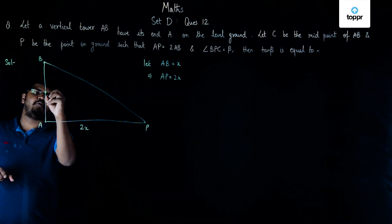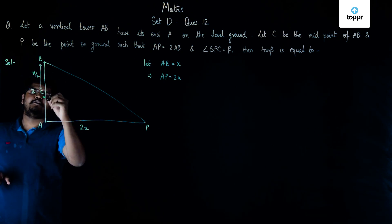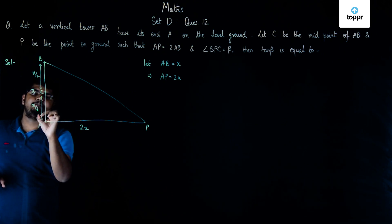Now, we also have to consider a midpoint C here and since this is the midpoint, so I can say this length is X by 2 and this length again is X by 2.